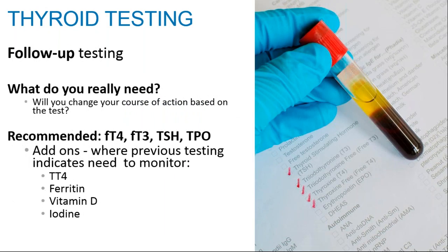For follow-up testing, I ask myself what do I really need. If I've tested vitamin D, gotten levels optimal, and I'm not changing the dose, I don't need to check it constantly. If total T4 is optimal and I'm not changing therapy, I don't need to recheck it — I'll just use free T4, free T3, TSH, and TPO. I use the ZRT laboratory capillary dried blood spot test a lot for follow-up — it's convenient because patients can do it at home at whatever time they need.